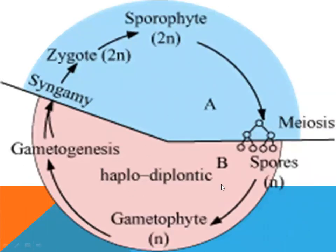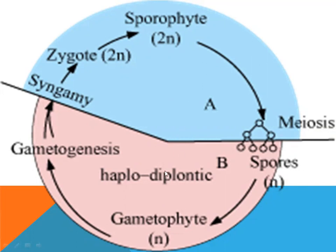When both stages — 2N and haploid — are present, that is called haplodiplontic. It will become a diploid sporophyte plant of 2N. The main organism is also a gametophyte. This alternation between haploid and diploid stages is called alternation of generations.